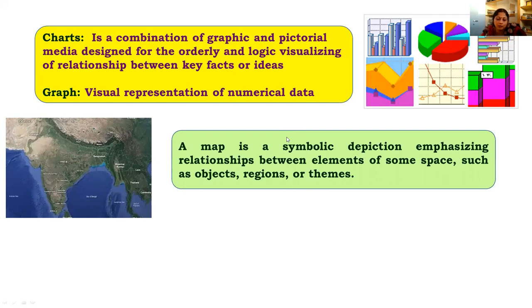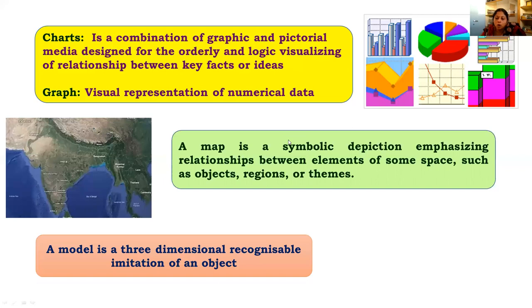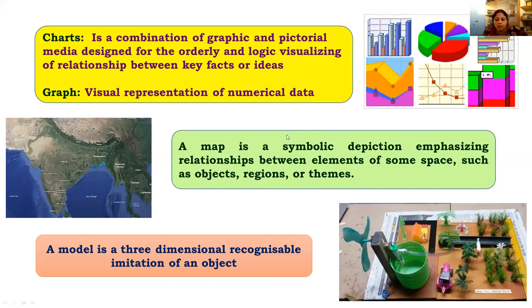Next is a model. A model is a three-dimensional visual aid — an imitation of an object which is recognizable. For example, the picture shown here depicts a wind energy system used for irrigation in farming, depicted in model form. It is a three-dimensional but recognizable image that gives a complete idea of how it works. That is what is called a model.